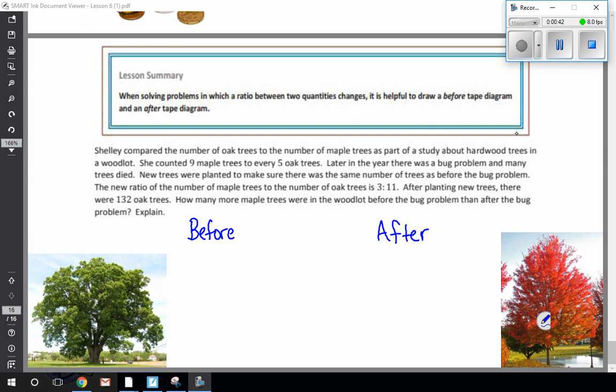So taking a look, the problem says Shelley compared the number of oak trees to the number of maple trees as part of a study about hardwood trees in a woodlot. She counted nine maple trees to every five oak trees. Later in the year there was a bug problem and many trees died. New trees were planted to make sure there was the same number of trees as before the bug problem. But the new ratio of the number of maple trees to the number of oak trees is three to eleven. After planting new trees there were 132 oak trees. How many more maple trees were in the woodlot before the bug problem than after the bug problem? Explain.